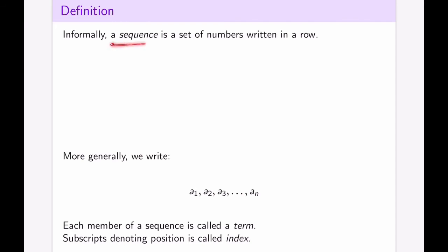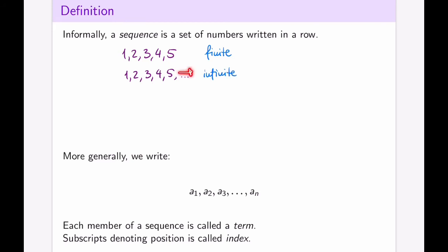A sequence, simply put, is a set of numbers written in a row. For example: 1, 2, 3, 4, 5. This is a finite sequence — it only has five numbers. I can also have 1, 2, 3, 4, 5, dot dot dot, where the dots signify that whatever pattern exists at the beginning carries on forward. The second one is what we would call infinite because it goes on forever.